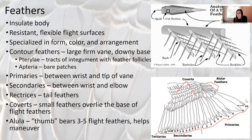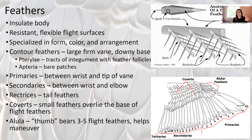The primary feathers are at the end of the wing, attached between the wrist and the tip of the wing. The secondaries are attached between the wrist and the elbow, and then there are also tertiaries. Retrices are the tail feathers, and the coverts are the small feathers that overlay the base of the flight feathers. The alular feathers are connected to the alula, which is like the thumb of the bird wing, and there are three to five flight feathers that attach there — they're really important in maneuvering in flight.